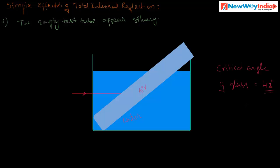Here the critical angle is 42 degrees. That means if a ray of light strikes the glass-air surface — this surface is glass and this is air, two different mediums — and strikes the glass-air surface at more than the critical angle, that means the incident angle is more than 42 degrees, then it gets total internal reflection. This ray gets total internal reflection and passes back like this. So the ray gets total internal reflection.